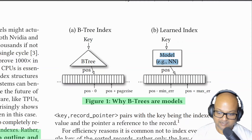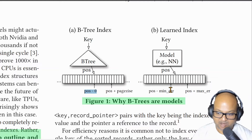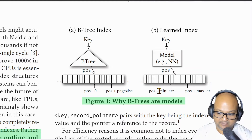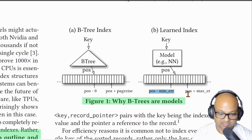But you might say that this is not exactly the same thing because the btree index will tell you exactly what the position of the key is, whereas the model might have some error associated with its prediction. But in this particular case, we're assuming that the underlying data is sorted. And so even if there's a small error, you can quickly find the exact element by doing a small local search around the predicted position.